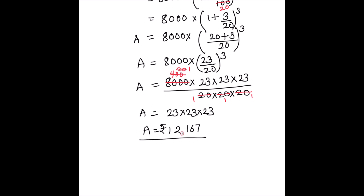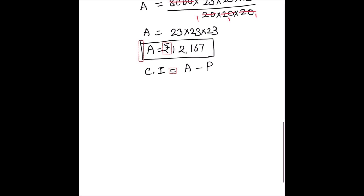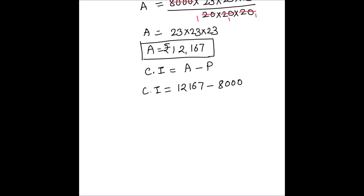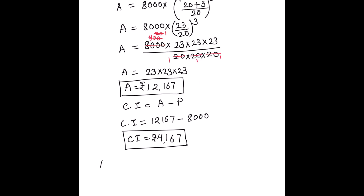So 23 times 23 times 23 equals 12167. This is our amount. Now compound interest equals amount minus principal, which is 12167 minus 8000. Subtracting: 7 minus 0 is 7, 6 minus 0 is 6, 1 minus 0 is 1, and 12 minus 8 is 4. So compound interest equals rupees 4167.